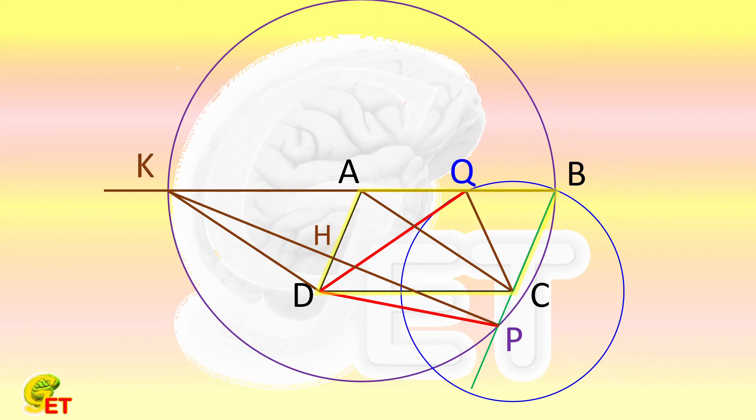Since ABCD is a parallelogram, segment AB is parallel to DC, and segment AD equals BC. Segments CQ and BC are both radii of circle C, so they are equal to each other. We therefore have the length of segment AD equals that of CQ.